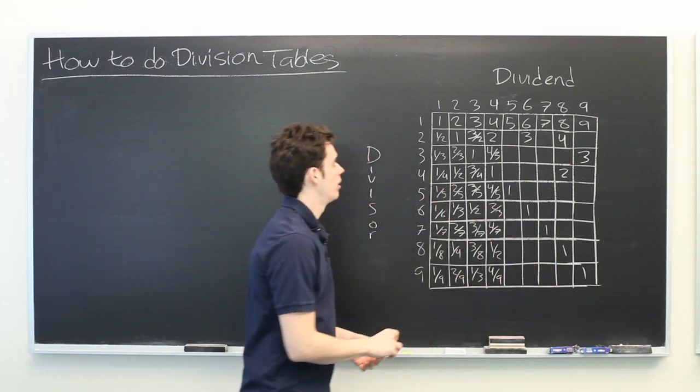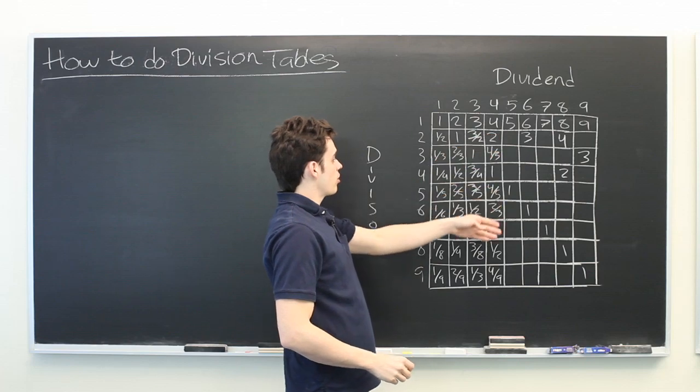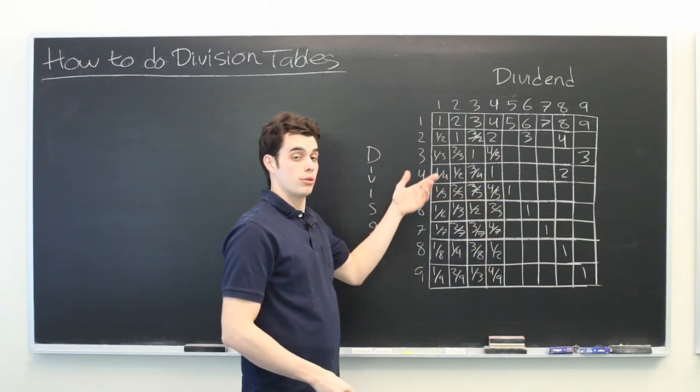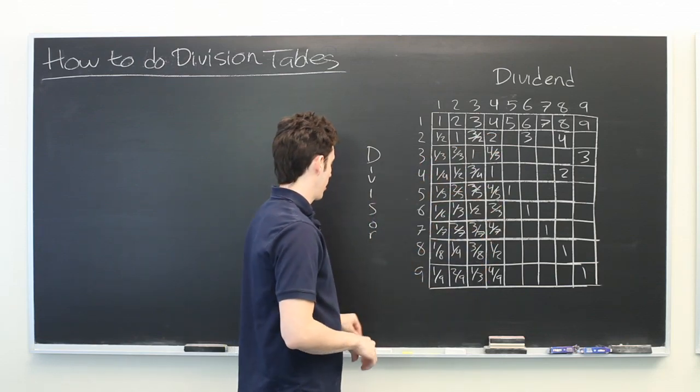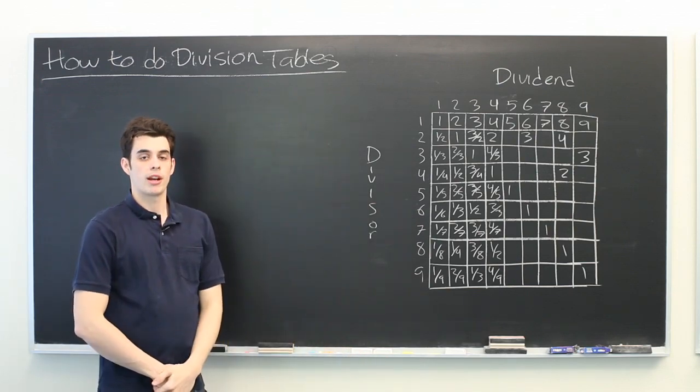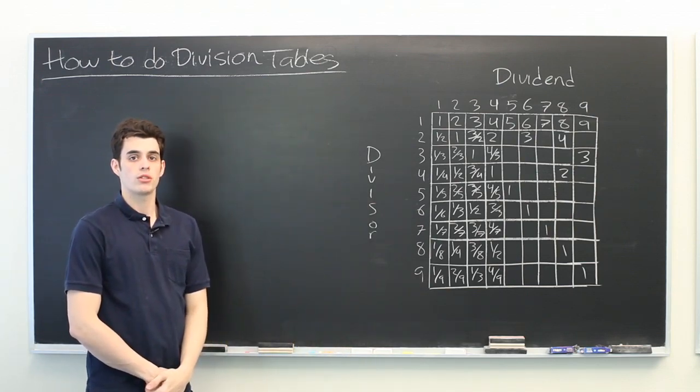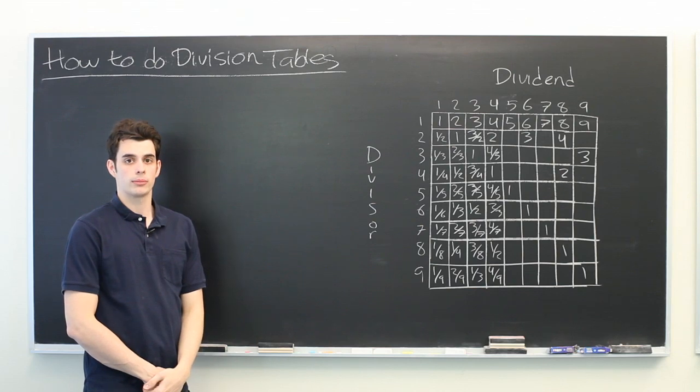And so on and so forth. Simply compute the fractions, and then if they can be reduced, reduce them. My name is Ryan Malloy, and we've just discussed how to do division tables.